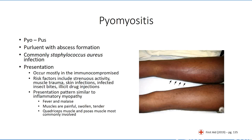Risk factors for developing pyomyositis include strenuous activity and trauma to either muscle tissue or skin. Patients typically present with a similar presentation pattern as that seen for the inflammatory myopathy, except that patients are more likely to have fever and a general sense of ill health. Because the disease typically presents as pain within the hip region, it may initially be confused with other conditions, such as septic arthritis of the hip or acute appendicitis if the right psoas is affected.